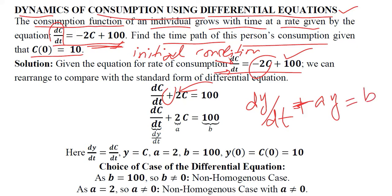Now it is comparable and in place of y we have C, in place of dy/dt we have dC/dt, and the value of small a is 2 and the value of small b is 100. So now we have written these values separately.